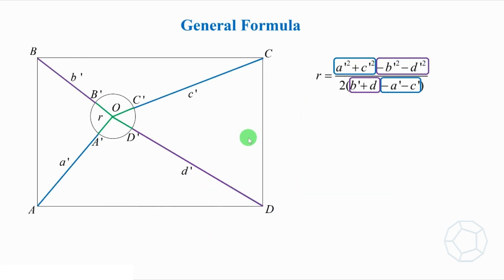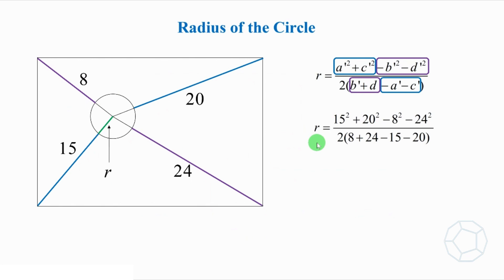Now, we put the values of a', b', c', and d' into the formula. Then, the radius of the circle is equal to 5 over 2.